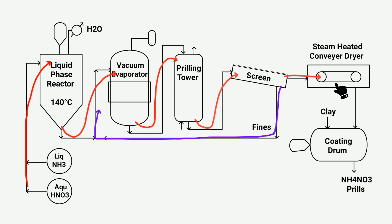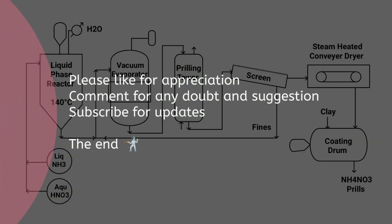Before the clay coating process, it is essential to dry the ammonium nitrate. A steam heated conveyor dryer is utilized to remove moisture. Once dried, the ammonium nitrate is transferred to the coating drum where it is coated with clay. The clay coating serves to modify and enhance the specific properties of the ammonium nitrate. Finally, granular ammonium nitrate is obtained and stored for further use.